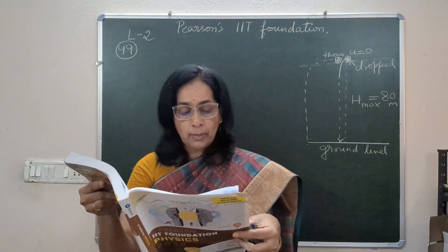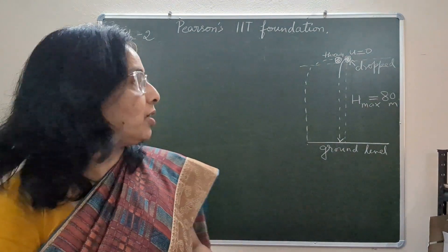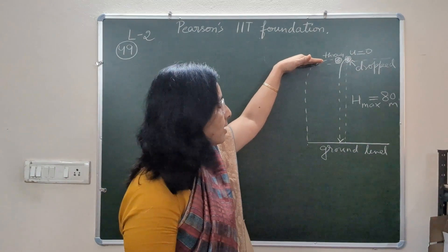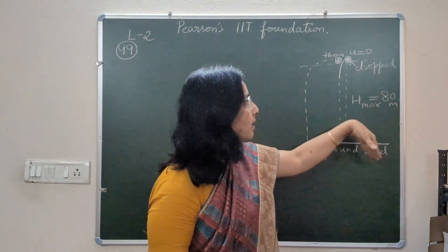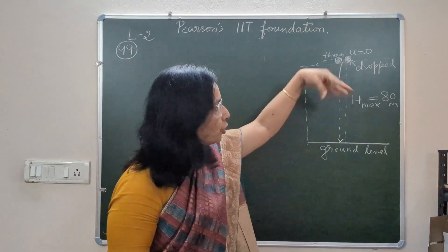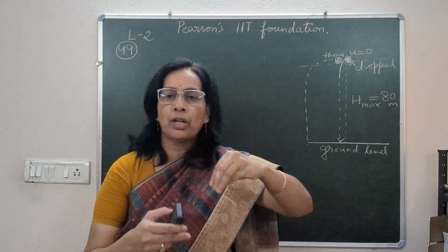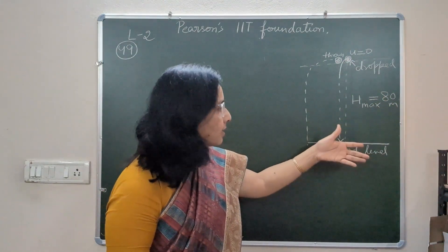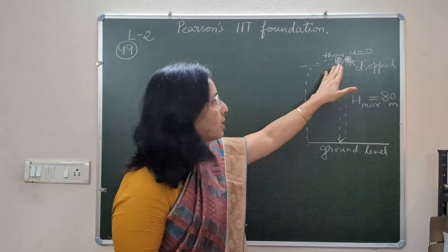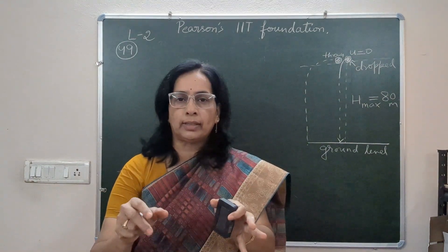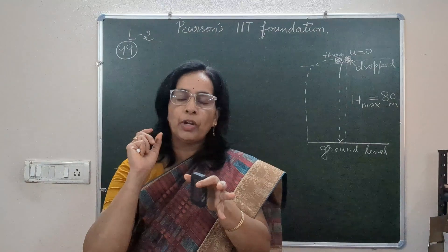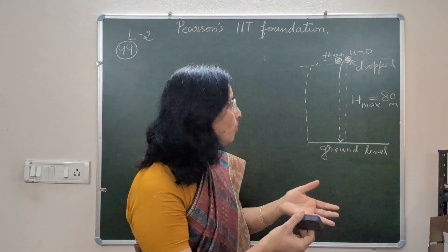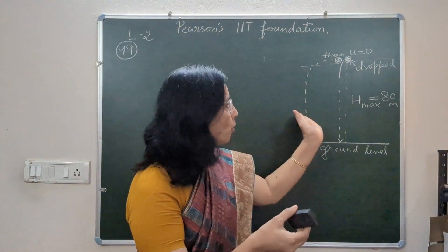Find the time taken by both the balls to reach the ground. To understand the question, I have drawn a diagram of the situation. This is the ground level, and from a height of 80 meters above the ground, one object is just dropped — when things are dropped, their initial velocity is zero and they travel 80 meters to reach the ground. From the same point, there is another body which is thrown, meaning it has some initial velocity.